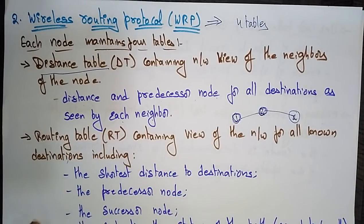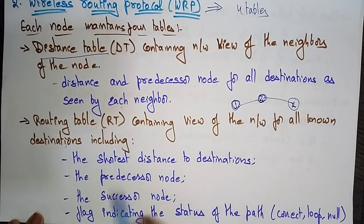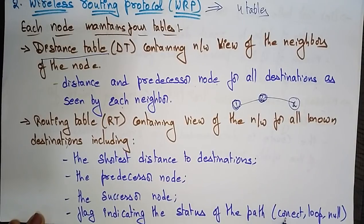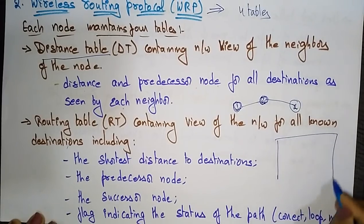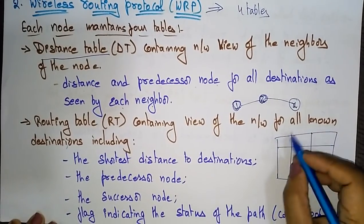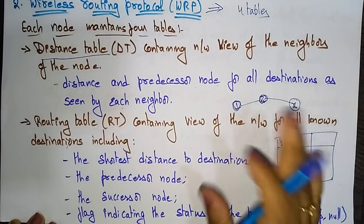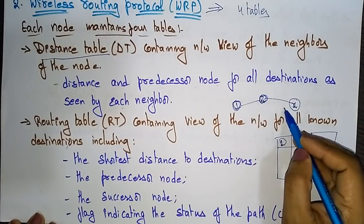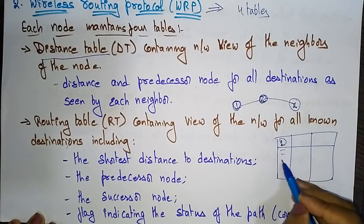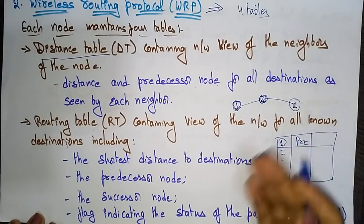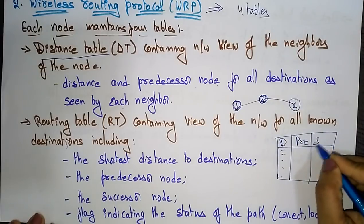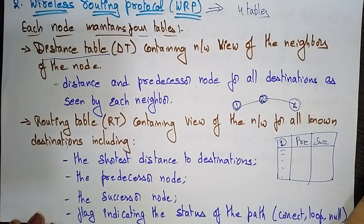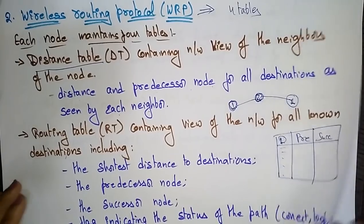The routing table contains a view of the network for all known destinations, including the shortest distance to the destination, the predecessor node (the node before), the successor node (the next node), and a flag indicating the status of the path — correct, loop, or null.